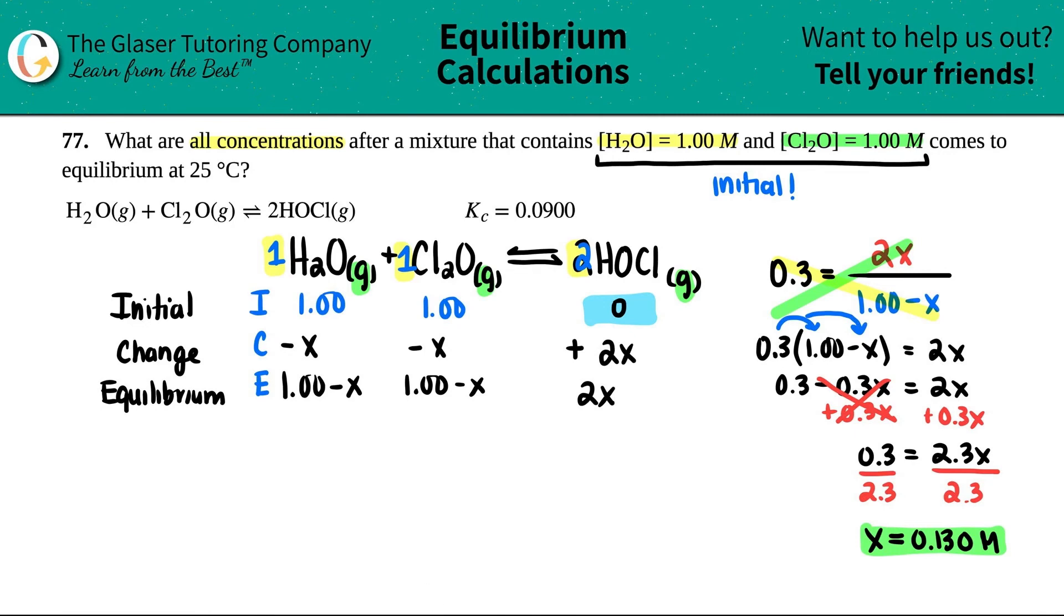Looking at the equilibrium values: concentration of H2O, concentration of Cl2O, and concentration of HOCl. At equilibrium, H2O was 1.00 minus x, same with Cl2O 1.00 minus x, and HOCl was 2x. Plug in that x value: 1.00 minus 0.130, same thing here, and this is 2 times 0.130.